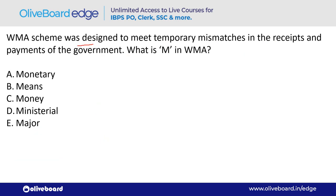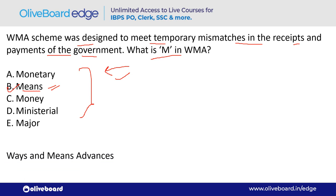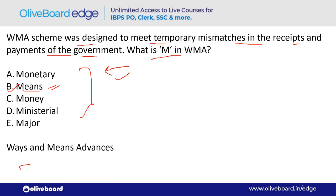The WMA scheme was designed to meet temporary mismatches in the receipts and payments of the government. What does 'M' represent in WMA? M stands for Means — option B. The full form of WMA is Ways and Means Advances.